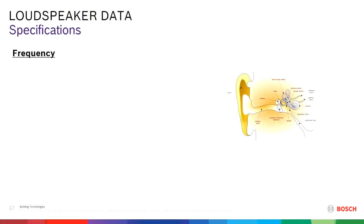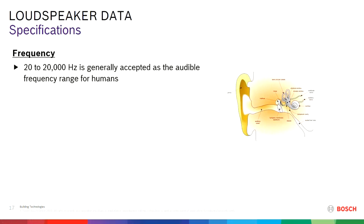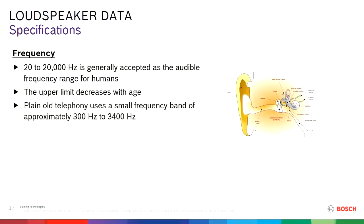Frequencies are important. In human hearing, people can hear frequencies on average from 20 Hz to 20,000 Hz — 20 kHz. That's the range that humans can hear. Animals like cats and dogs can go beyond 20,000 Hz. The upper limit of 20,000 Hz decreases with age, so the older you get, the lower that upper threshold becomes — it can go down to 18,000 Hz or 16,000 Hz. It's also related to how old somebody is.